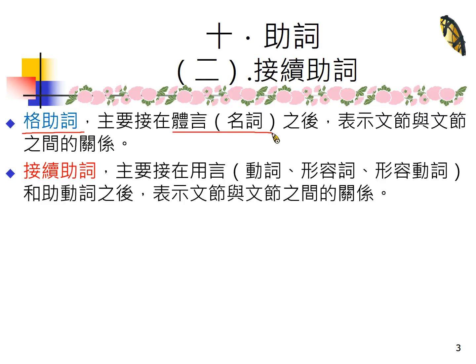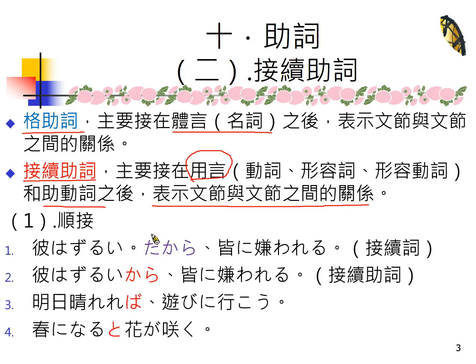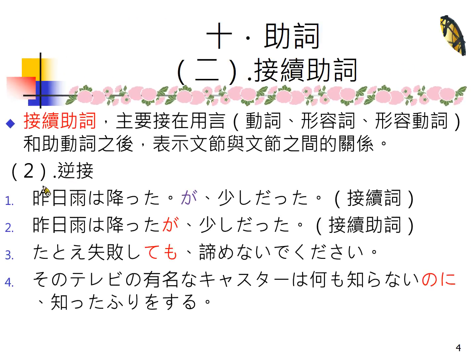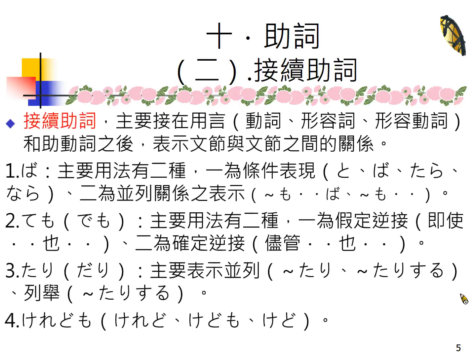格助词之前我们都提过了，大概十个左右，主要接在体言、名词的后面，表示文节跟文节之间的关系，が、の等等。接续助词跟格助词相对的地方是，它是接在用言或助动词后面，也就是说它会有一些词语变化的这些词类之后。表示文节跟文节之间的关系，通常就是顺接——因为怎么样所以怎么样，或者是逆接——但是，即使怎么样也怎么样，或者却怎么样。